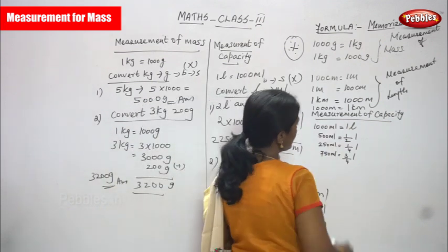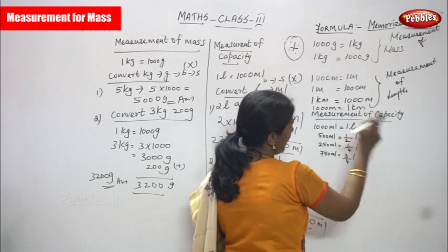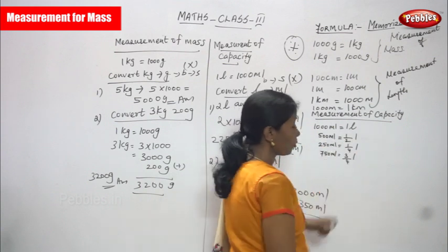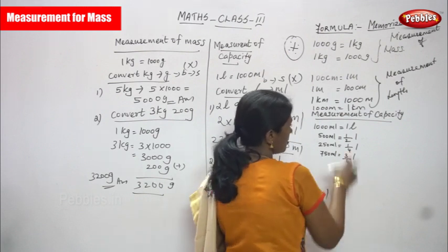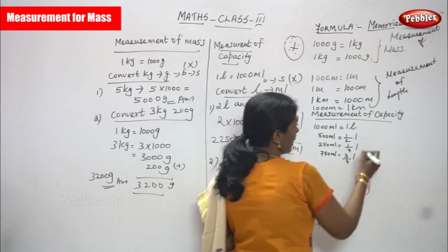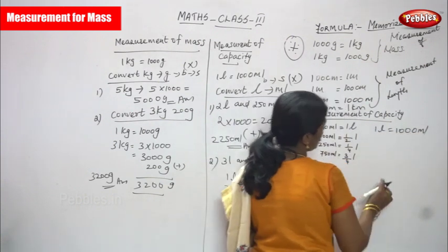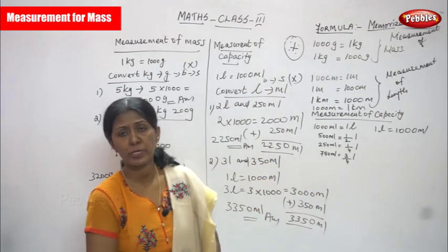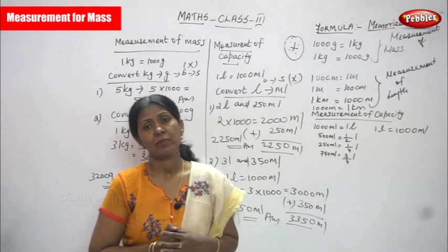Measurement of capacity: 1000 ml is equal to 1 liter. 500 ml is equal to half a liter. 250 ml is equal to a quarter liter (1/4). 750 ml is equal to 3/4 liter. You can also write 1 liter is equal to 1000 ml. According to the question, you have to change the formula. I think you understand the measurement very well.